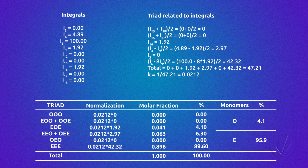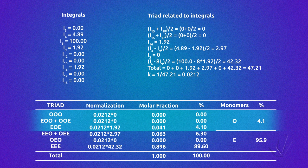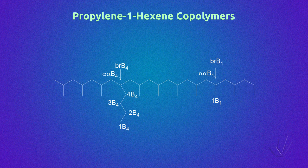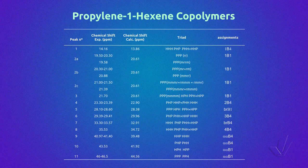If we want to know the percentage of each comonomer, we add the triads centered in O to know the amount of 1-octadecene, which in this case is 4.1%, and the triads centered in E to have the amount of ethylene, that is 95.9%. Now I am going to show you a more complex case: a propylene-1-hexene copolymer. Here we can see a figure with the structure and the nomenclature used for the carbon atoms of this copolymer. Here we have the table with the assignments of all the possible resonances, the calculated and experimental chemical shifts, the triads and the carbon atoms related to each peak.